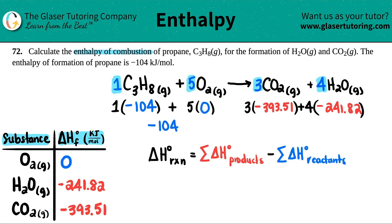I got a big number. Don't be scared. Negative 2147.81. Now I'm ready to use my formula. The enthalpy change or the delta H for the reaction is just products minus reactants. Negative 2147.81 minus the reactants, which is negative 104.